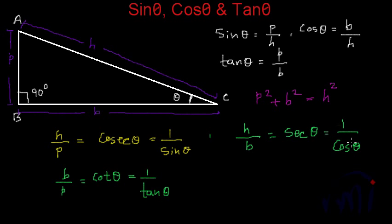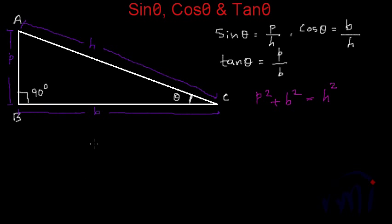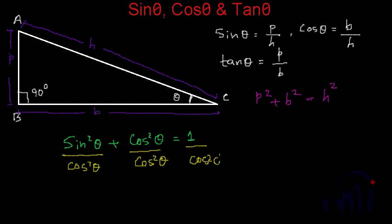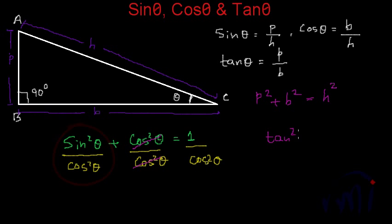There is one more relation which can be derived from the relation sin²θ + cos²θ = 1. If we divide both sides by cos²θ, we get tan²θ + 1 = 1/cos²θ, which is sec²θ. So this is the relationship between tan theta and sec theta: tan²θ + 1 = sec²θ.